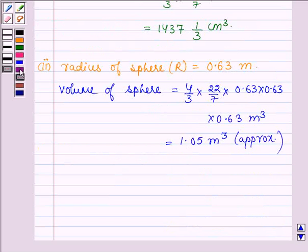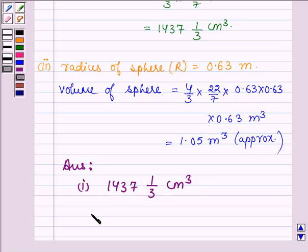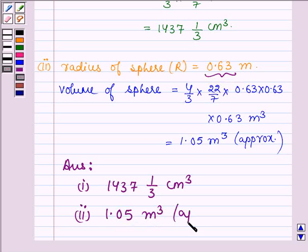Hence, our answer is: A sphere having radius 7 cm has volume 1437 and 1 upon 3 cm cube, and if the radius of the sphere is 0.63 m then its volume is 1.05 m cube approximately.